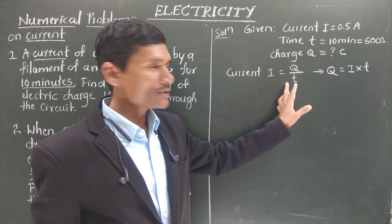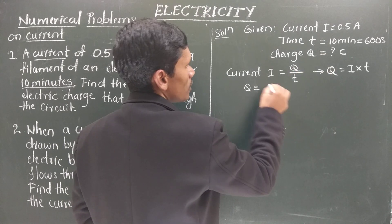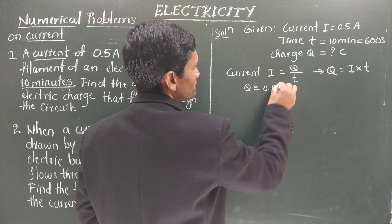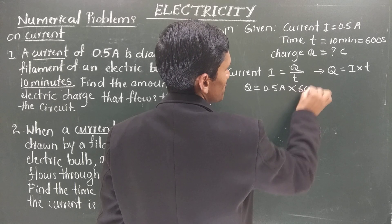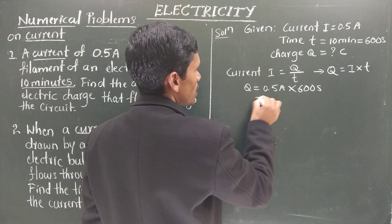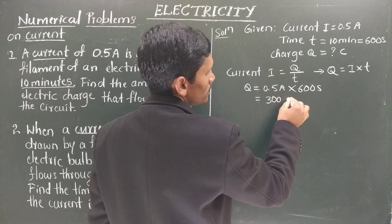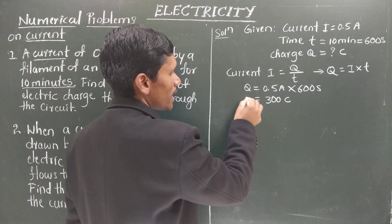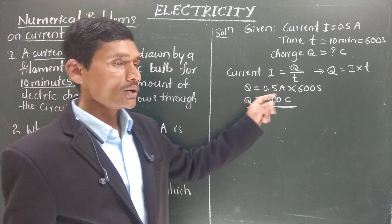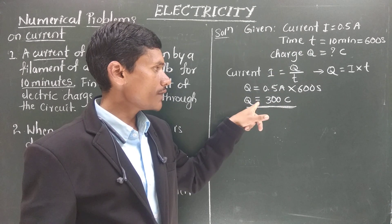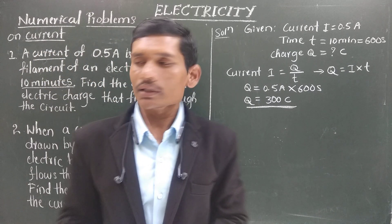Now substituting the values: q = i × t = 0.5 ampere × 600 seconds = 300 coulomb. So the charge that flows through the circuit is q = 300 coulomb. That is the answer to the first problem.